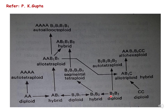Suppose hybridization takes place between B1B1 and B2B2 plants and a hybrid B1B2 is formed. When chromosome duplication takes place in this hybrid, it leads to a tetraploid which will be considered a segmental tetraploid because the genomes are related to each other — B1B1 and B2B2 probably share some homologous parts and some non-homologous parts.